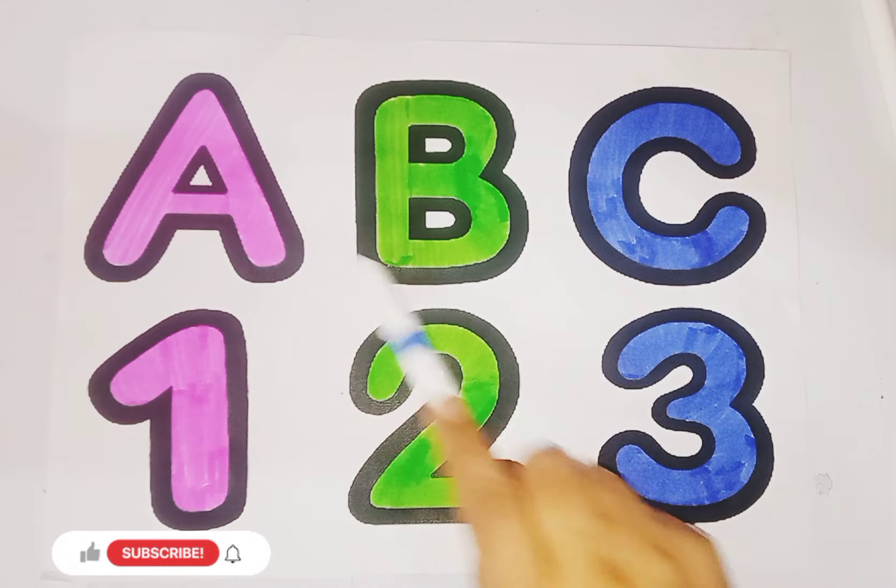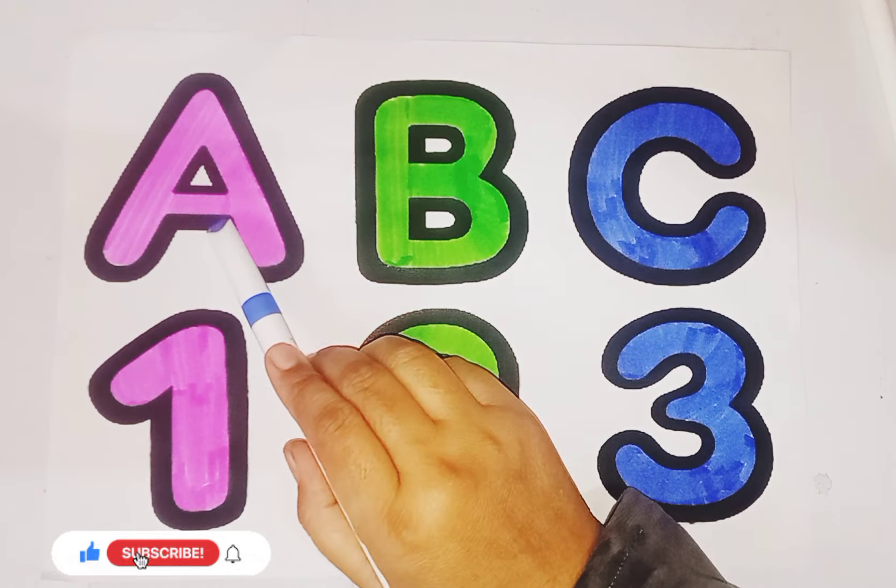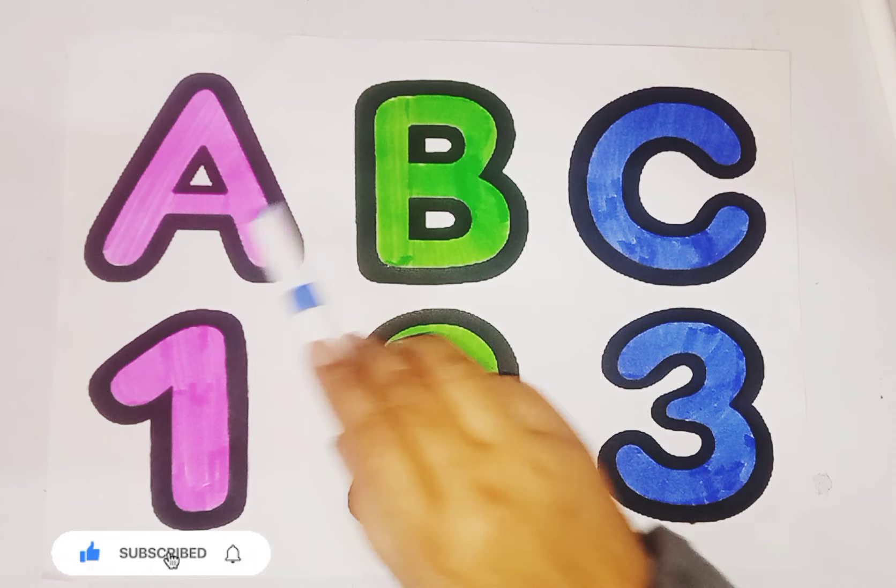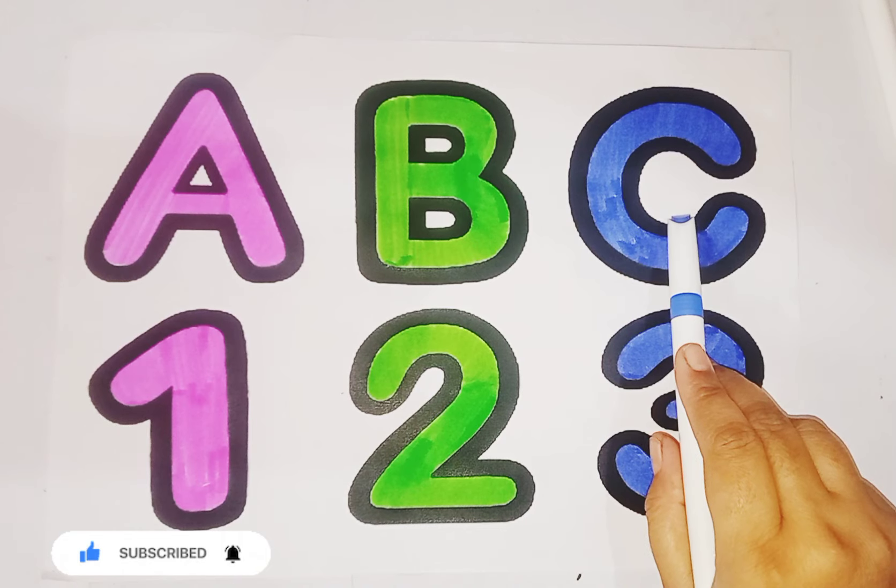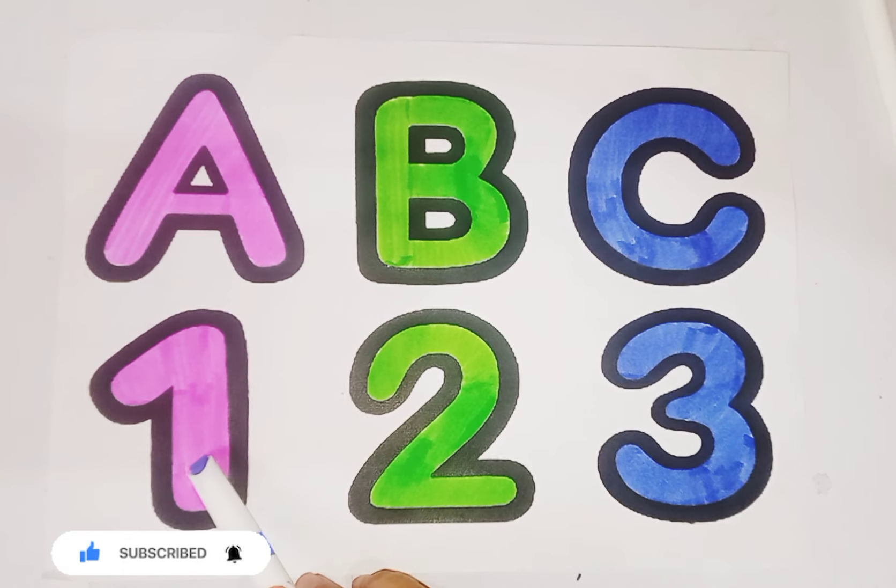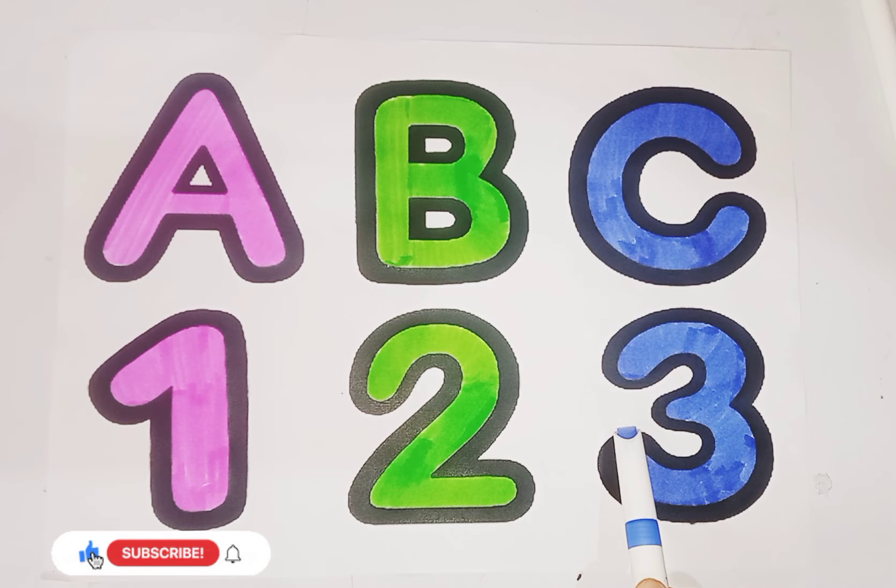So kids, today we learn alphabet and numbers, let us revise again. This is letter A, A for Apple, B, B for Ball, C, C for Cat. 1, O, N, E, 1, 2, T, W, O, 2, 3, T, H, R, double E, 3.